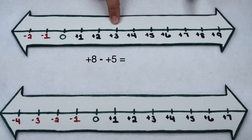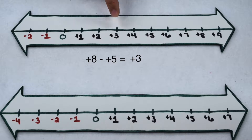When I head back to the left 5 places, I land at positive 3. So positive 8 minus positive 5 gives me positive 3.